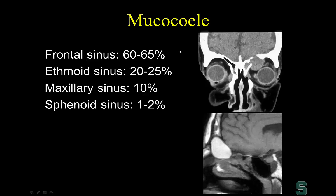Very chronic disease can form a mucocele, defined as complete obstruction of a sinus that also expands the sinus. A mucocele is well-defined, completely opacifies the sinus, and on non-contrast T1-weighted MR shows high T1 signal due to protein content. Because of intrinsic protein content, CT can show high attenuation giving an ominous appearance, as in this pathologically proven mucocele that eroded through the frontal sinus.